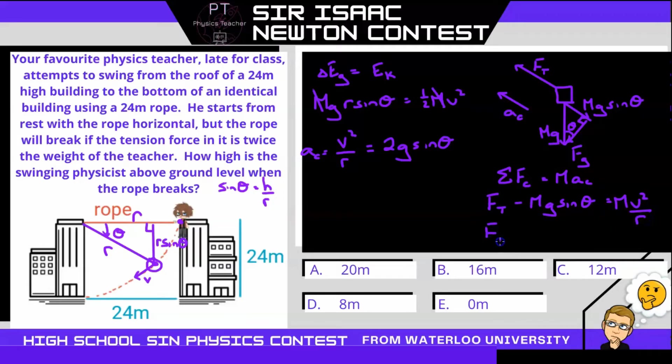Alright, well if I rearrange to solve for tension, we get mv squared over r, but v squared over r is 2g sine theta. So that is 2g sine theta. And then that's going to be plus, as I bring this term to the other side of the equation, mg sine theta. So another mg sine theta. So let's work on this problem over here. I'm going to continue over here. So tension is going to equal 2mg sine theta plus mg sine theta, which is 3mg sine theta.